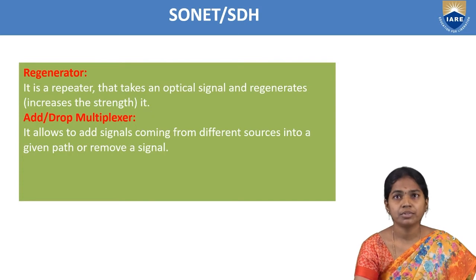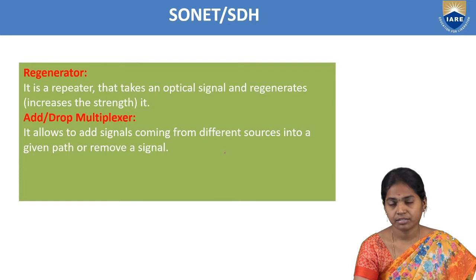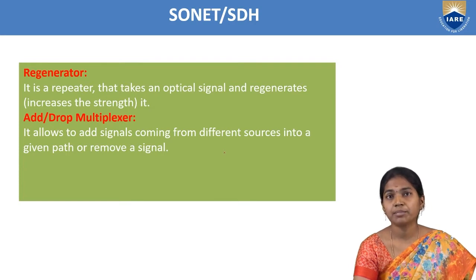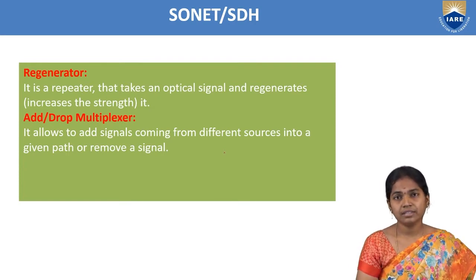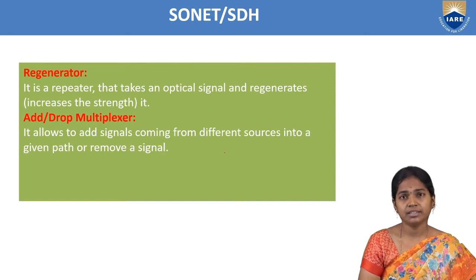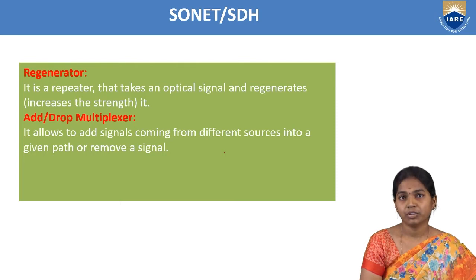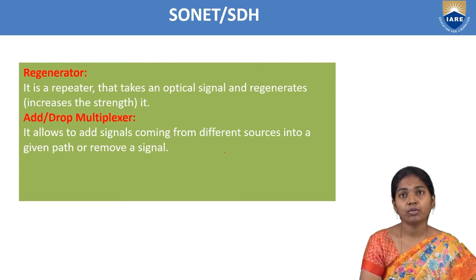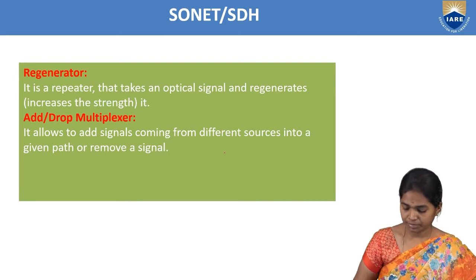The regenerator is a repeater that takes an optical signal, regenerates it, and increases the signal strength. The add drop multiplexer allows signals coming from different sources into a given path or removes a signal. If the receiving input is desired and necessary, it adds that input; otherwise it redirects. That is the use of the add drop multiplexer.